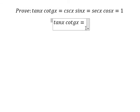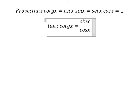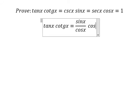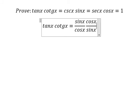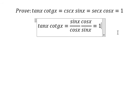We know that tan(s) is sine(s) over cosine(s), and cosine(s) is cosine(s). So cosine(s) divided by cosine(s) and sine(s) divided by sine(s) — this equals one.